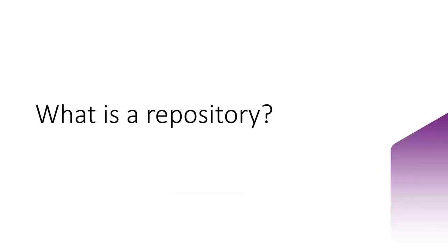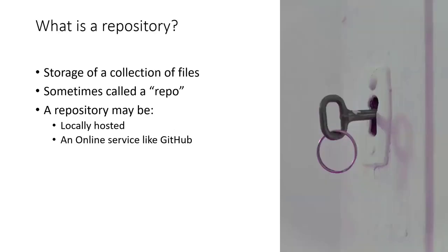A repository is simply a storage space for a collection of files. In a version control system this means a base project we're building up over time. Repositories are colloquially called repos, and a repo can be locally hosted on your computer, but usually we use an online hosting service. GitHub, GitLab, and SharePoint are all examples of repository hosting services.